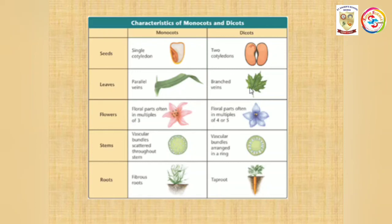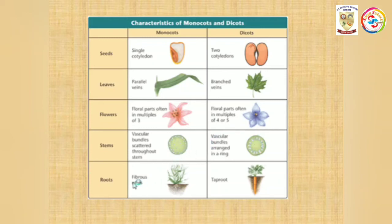Regarding stems: in monocotyledonous plants, vascular bundles — comprising xylem and phloem, the conducting tissues — are scattered throughout the stem. In dicotyledonous plants, vascular bundles are arranged in a ring. The roots of monocotyledonous plants have a fibrous root system.